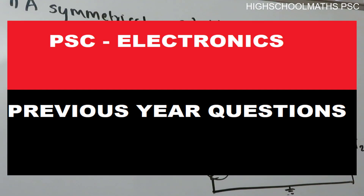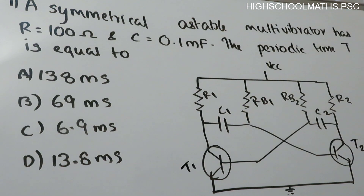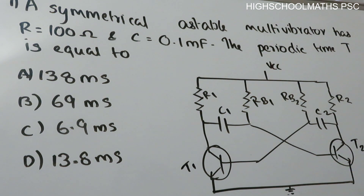Hi all, this is Meera. Welcome back to our channel Pinnamal Nukund. PSE Electronics previous question. First question: a symmetrical astable multivibrator has R equal to 100 ohm and C equal to 0.1 millifarad. The periodic time T is equal to — option A: 138 millisecond, option B: 69 millisecond, option C: 6.9 millisecond, option D: 13.8 millisecond.